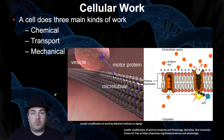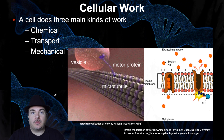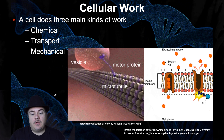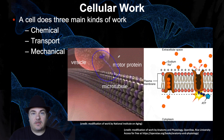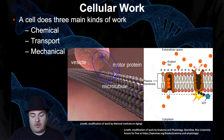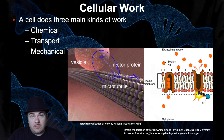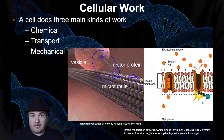Your cell does work. The three main types of work your cell does are chemical, transport, and mechanical. Some of these are things we've already discussed — for example, we talked about a motor protein. A motor protein does what it sounds like it does: it can move, like the feet on this motor protein walk along this microtubule. But in order to move, it needs energy. Where does it get the energy from? It gets it from ATP.